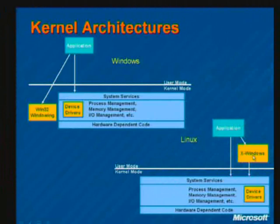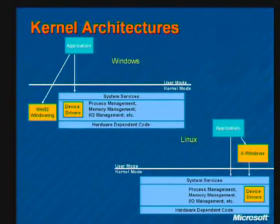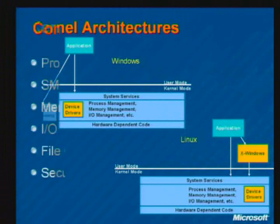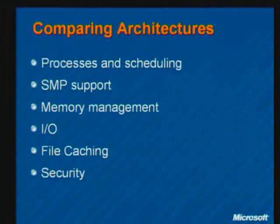X Windows uses a lot of tricks to minimize that performance impact. An advantage of the X Windows approach is that it makes it very easy to remote an application — something you can't do on Windows. On Windows, Terminal Server giving you a whole desktop is the only remote capability, whereas with X Windows you can run just the windows for individual apps on a remote client.